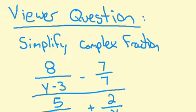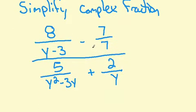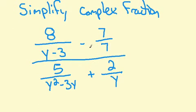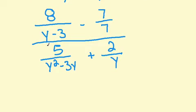complex fractions. I don't think I addressed this in the original video on complex fractions on how to find the lowest common denominator using factoring. So she offers this example: 8 over y minus 3 minus 7 over y all over 5 over y squared minus 3y plus 2 over y.